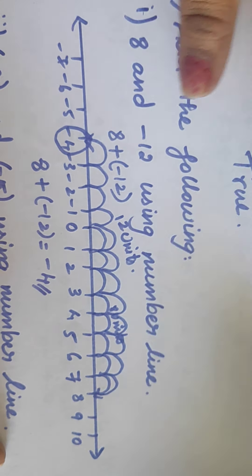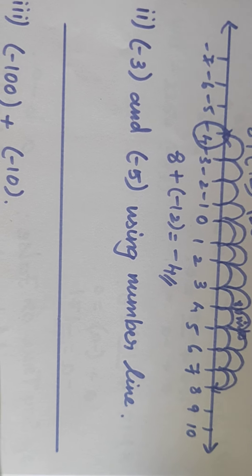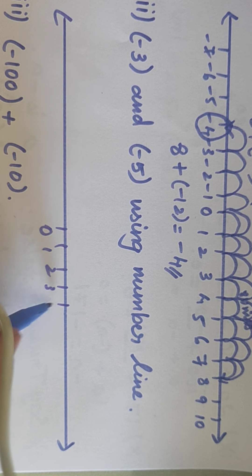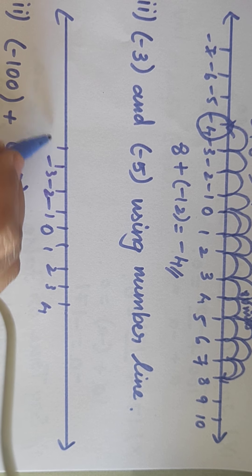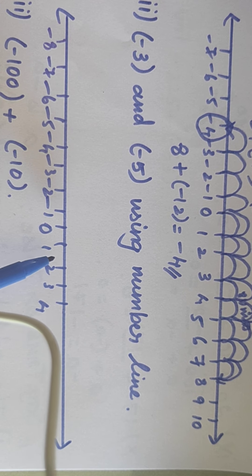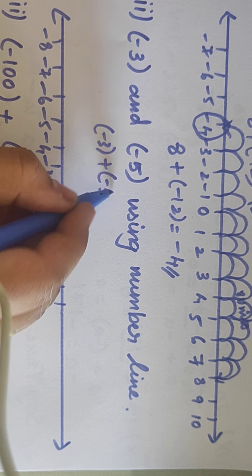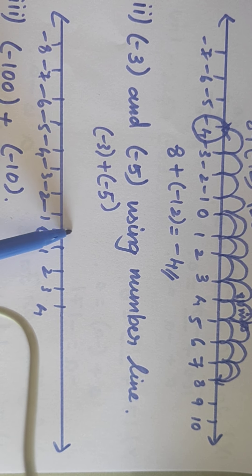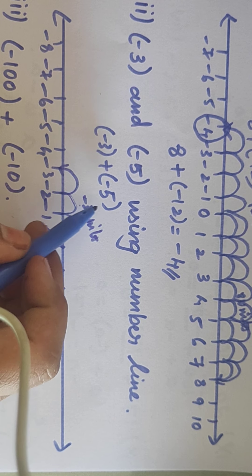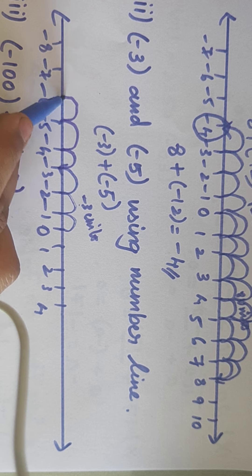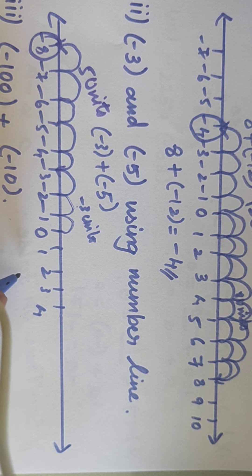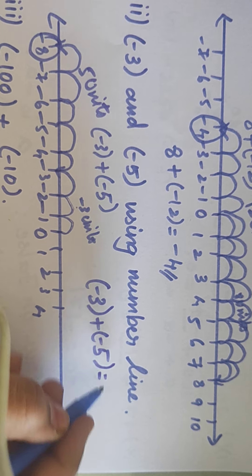Next question: minus 3 and minus 5 using number line. Draw the number line. First move minus 3 units: 1, 2, 3. So minus 3 units. Then on the same direction, move minus 5 units: 1, 2, 3, 4, 5. We stand here — that is 5 units. So the answer is (-3) + (-5) equals minus 8.